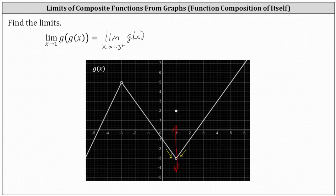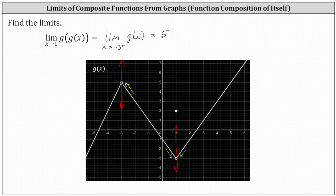Now we find this one-sided limit. We're approaching x equals negative three, which is here, and we're approaching from the positive side or right side, which would be from this direction here. Notice in this case, it wouldn't matter which direction we're approaching — either way, we are approaching a y value or function value of positive five. The limit as x approaches one of g of g of x equals five. I hope you found this helpful.